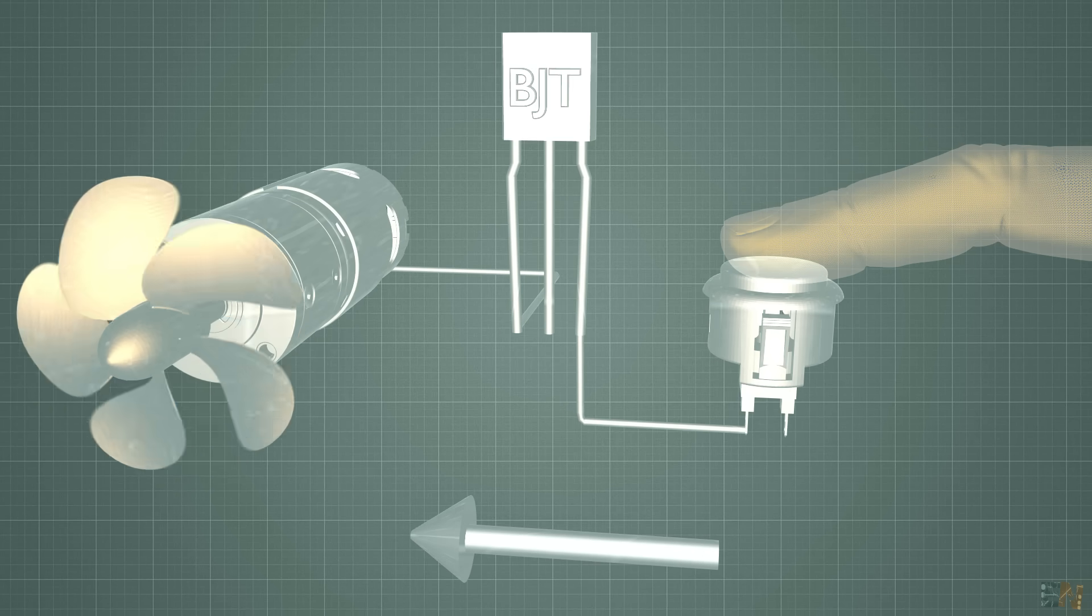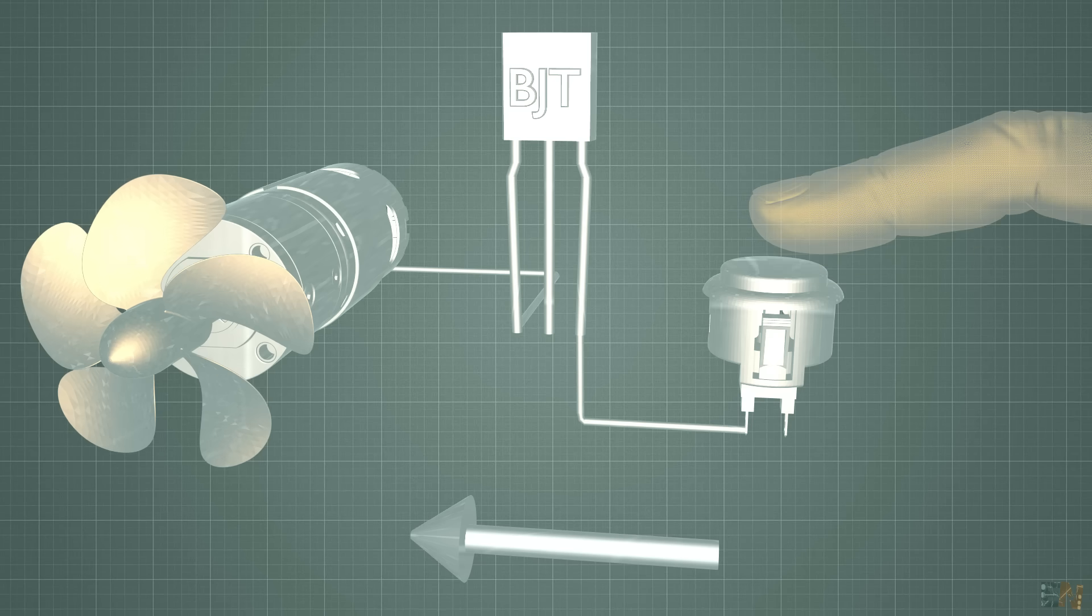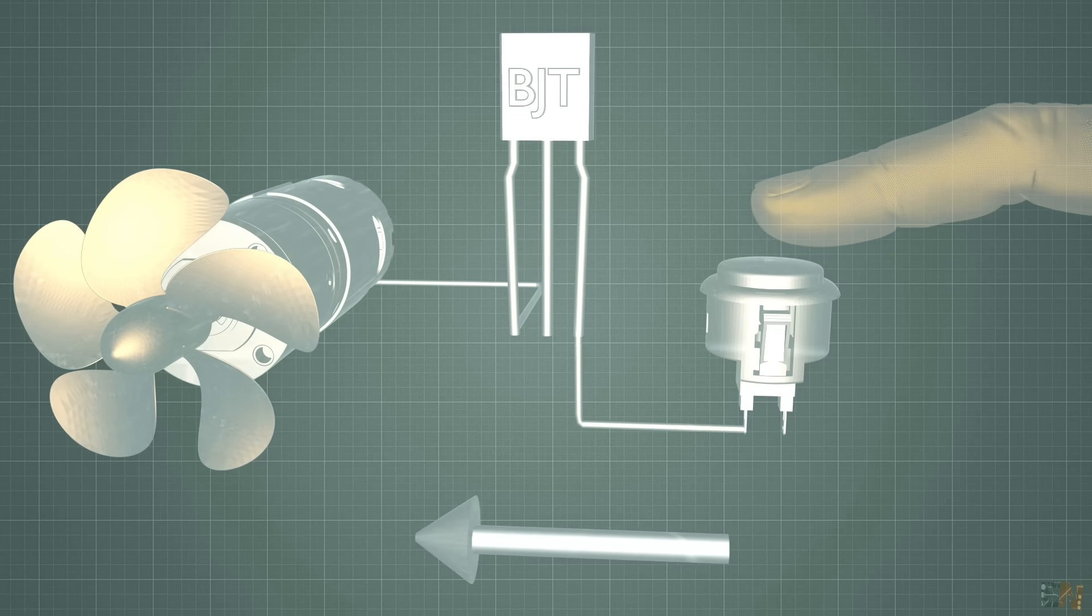We have our load and we want to control the current flow, which could be fully on, fully off or something in between of that and that will change depending on the signal applied to the gate or the base of our transistor.